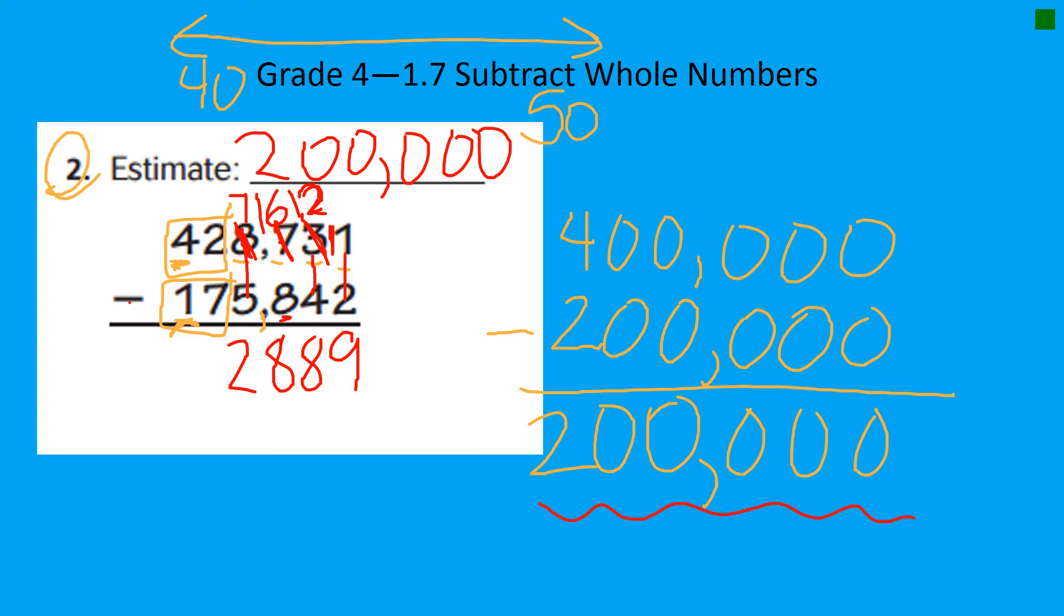Oh, 2 minus 7. Regroup again. Very exciting problem, isn't it? 4. We're taking one from you. We're bringing it over here. So instead of 2 ten thousands, now we have 12 ten thousands. 12 minus 7.